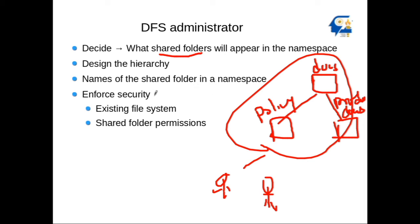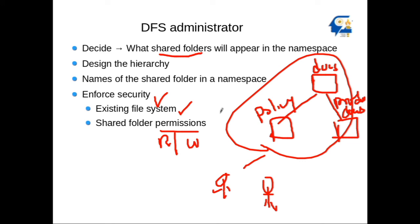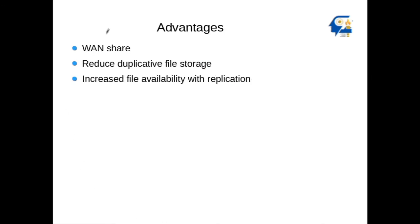Another thing the administrator needs to worry about is security — that is a very important point. The basic security comes from the existing file system, which enforces the base level of security, and permissions also play a vital role. The administrator can decide who is accessing the data and what kind of permission they have — either read permission or write permission. Whether to give read access or write access depends purely on the business scenario.